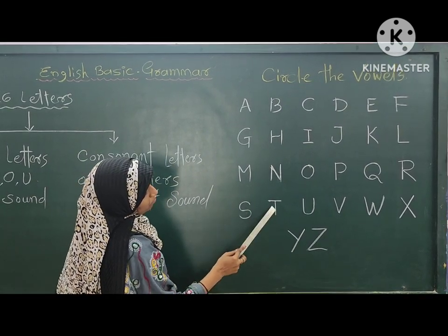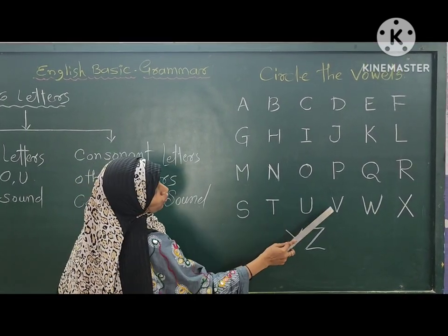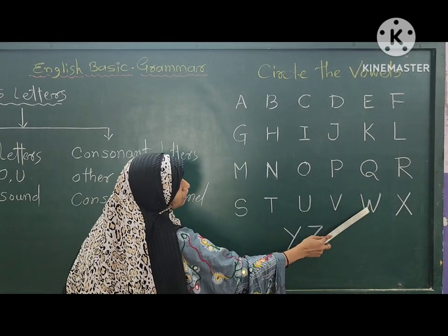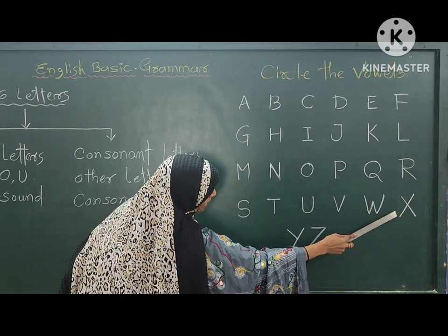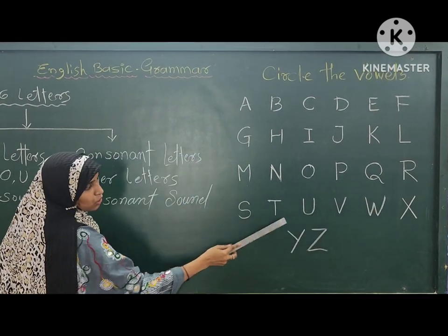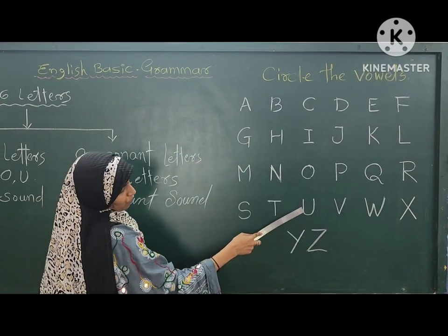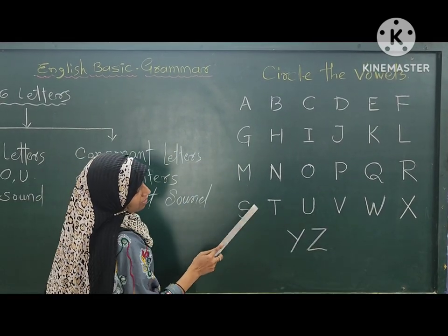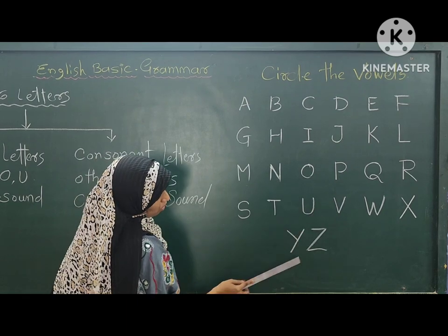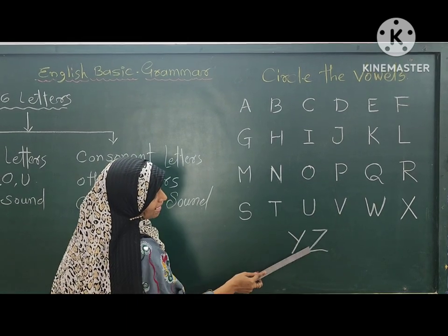S, T, U, V, W, S. Here, U is the vowel — sorry — U is the vowel and the rest of the letters are consonants.